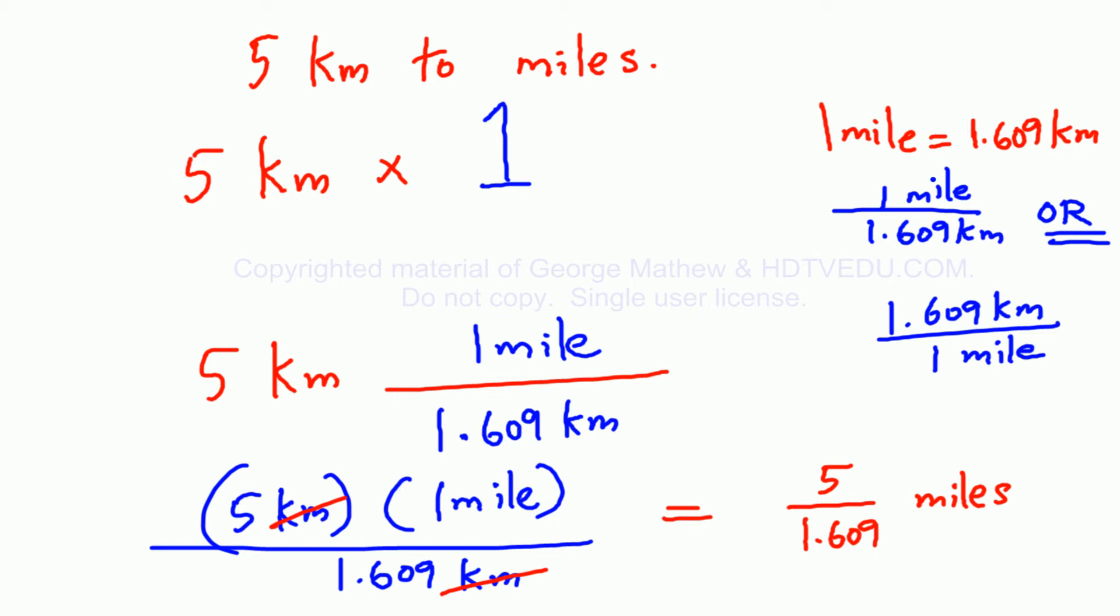5 divided by 1.609 is 3.1. The kilometers and kilometers got canceled. What is left? Miles.